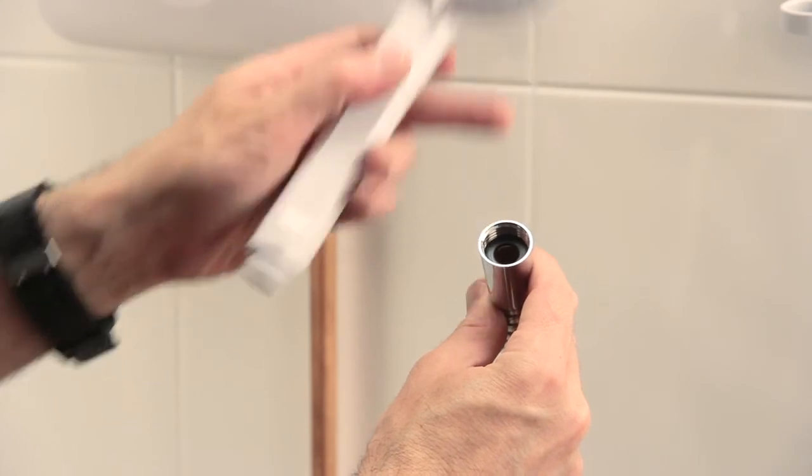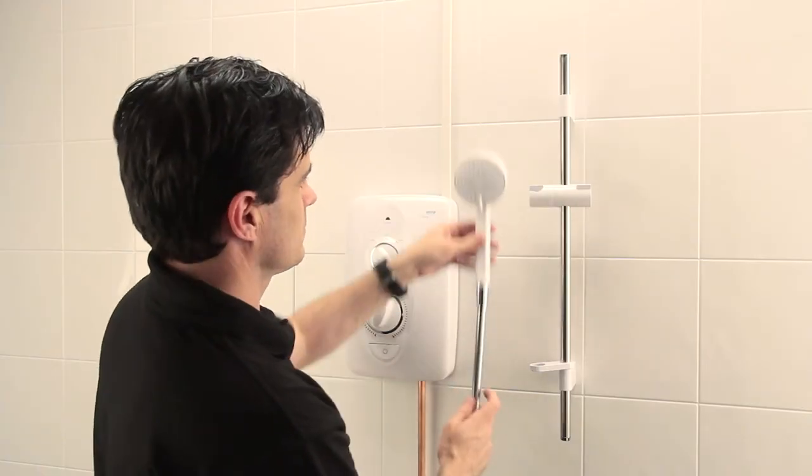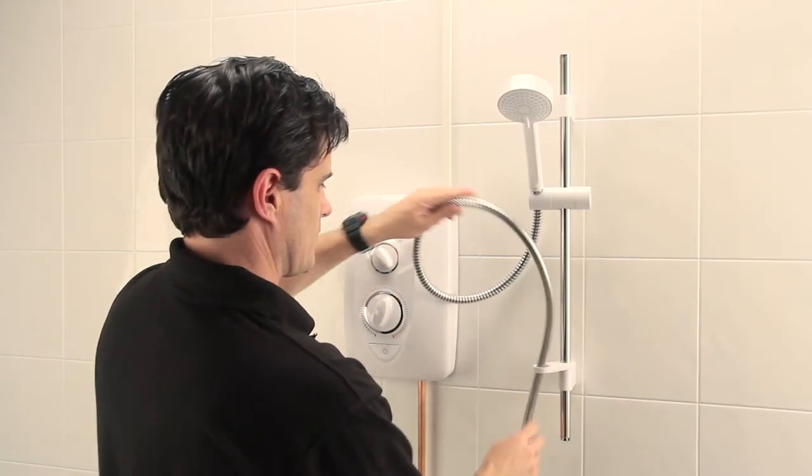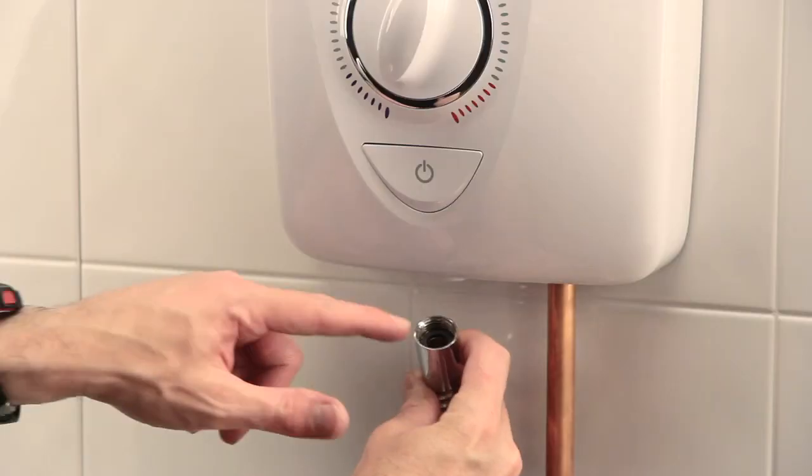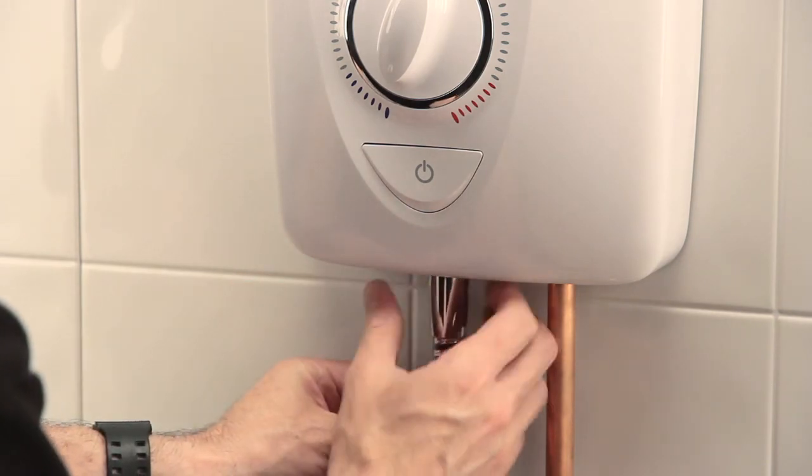Ensuring that the hose connector has the sealing washer in place, connect the shower hose to the handset. Place the handset in the handset holder and feed the hose through the hose retainer. Connect the other end of the hose to the shower unit, again ensuring the sealing washer is in place.